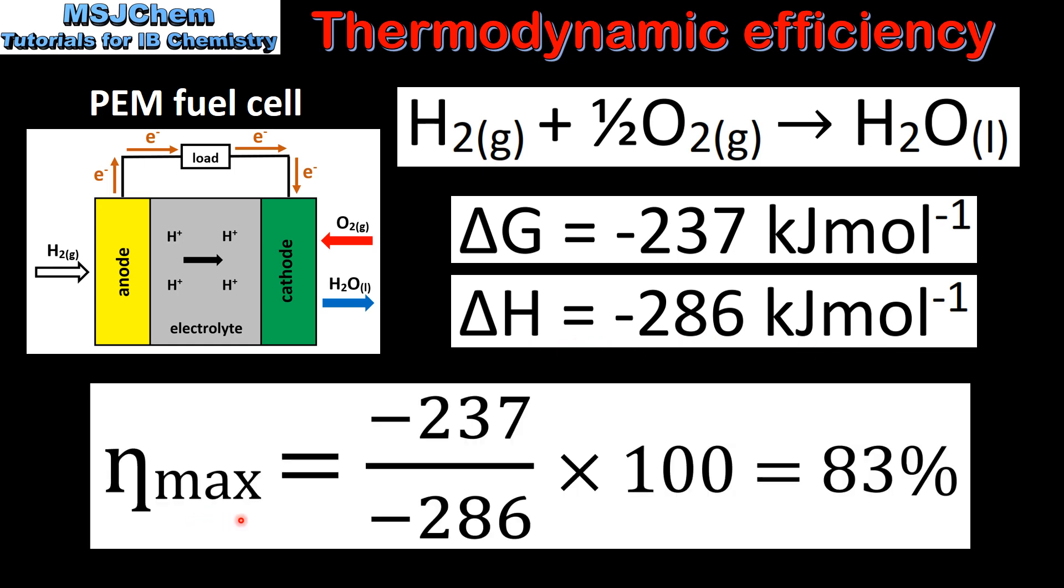Using this equation we can calculate the maximum efficiency for the PEM fuel cell. So it's the change in Gibbs free energy divided by the change in enthalpy multiplied by 100 which gives us a maximum efficiency of 83%.